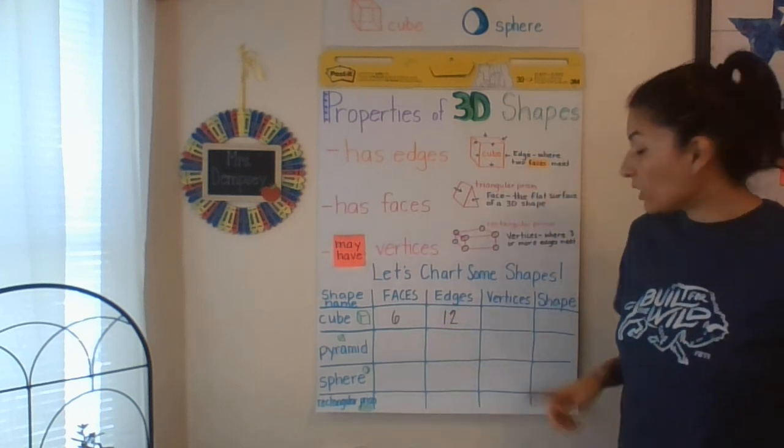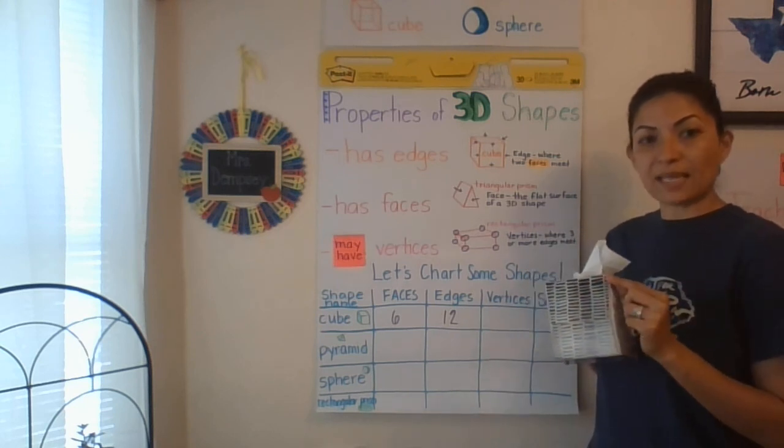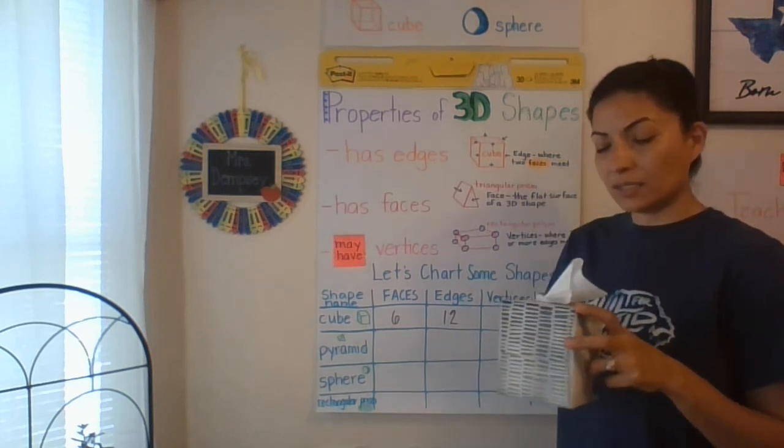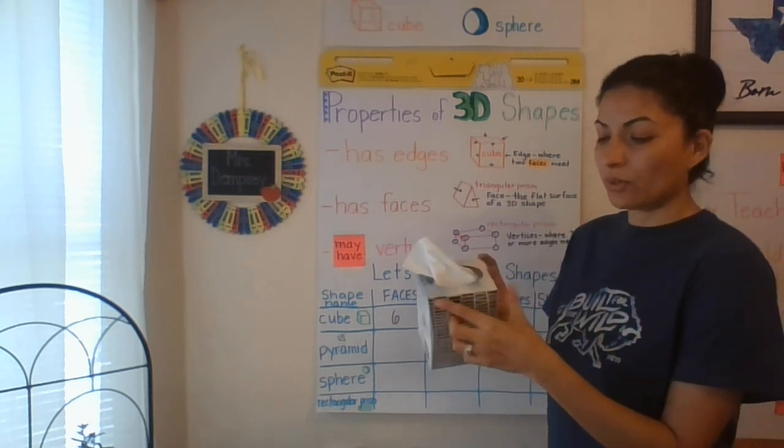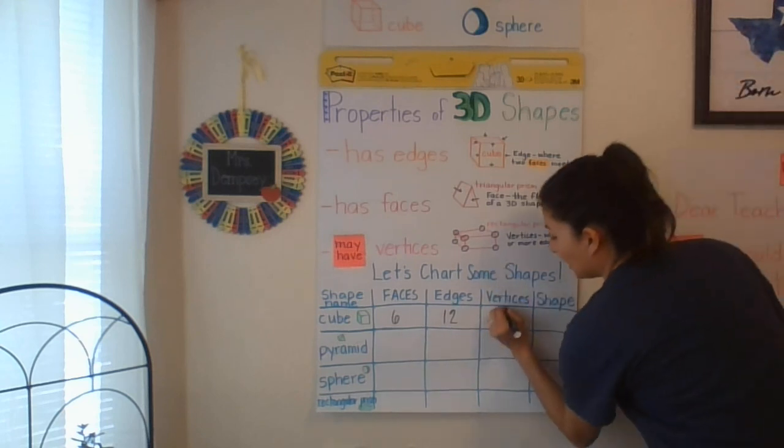Now, I want to look at the vertices. Remember, vertices is where the 3 edges meet at that point. So I have 1, 2, 3, 4, 5, 6, 7, 8. I have 8 vertices. So I'm going to write that in.